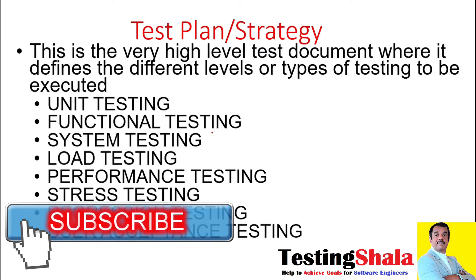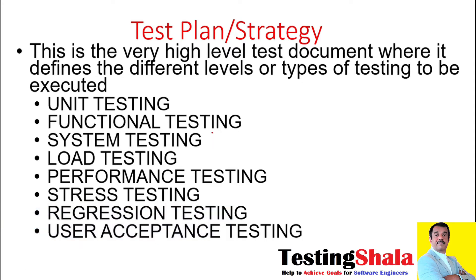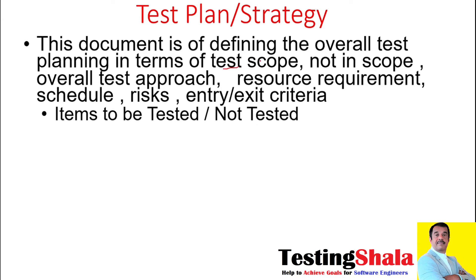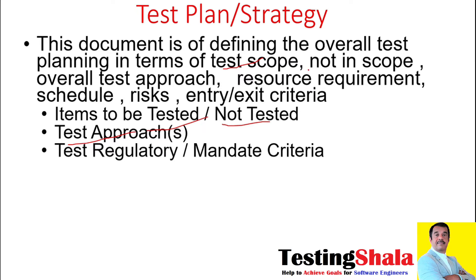Out of these different testing types, for your application, what kind of testing type are you going to use appropriately — that will be defined as part of this test plan. The second aspect defined in the test plan is the overall testing scope: what we will be testing and what we will not be testing, and what are the various approaches we will be adopting to certify the given software.